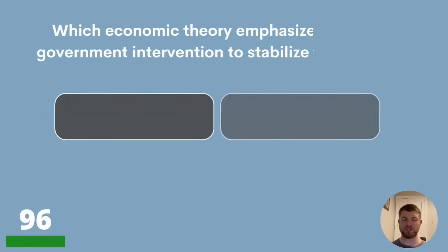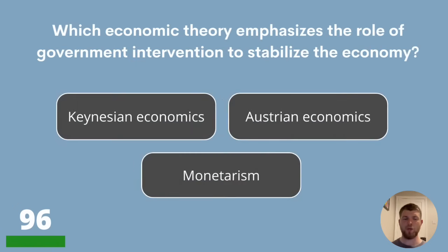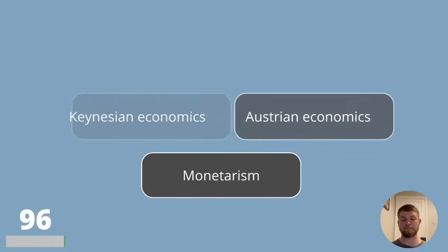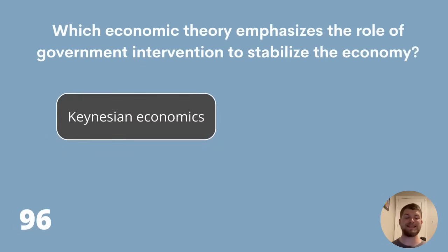Question 96 — five questions left. Which economic theory emphasises the role of government intervention to stabilise the economy? Keynesian economics, Austrian economics or monetarism? The answer is Keynesian economics.